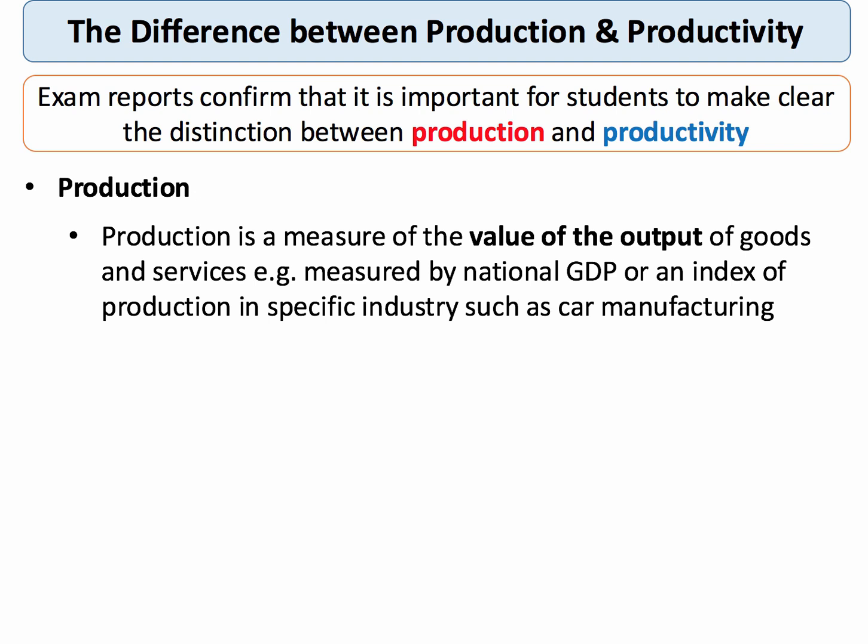Production is best defined as the value of the output of goods and services produced by businesses. We can aggregate that to look at total production measured by GDP, or we might focus on just the level of production in the car industry, the power sector, or production in hotels, leisure and catering. So production is essentially a measure of the value of output.